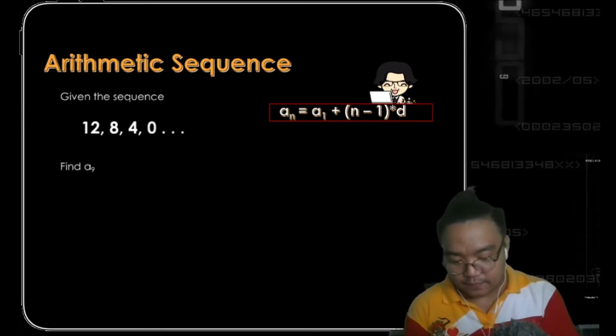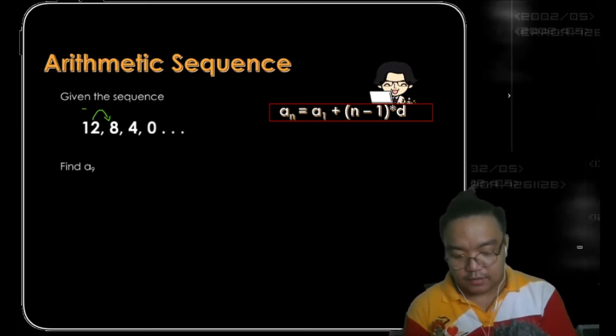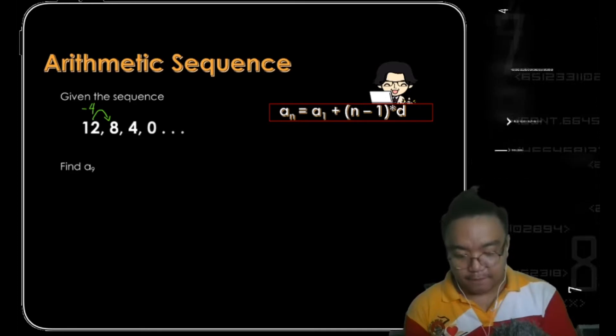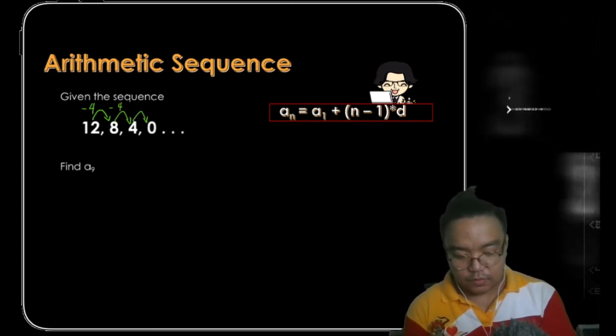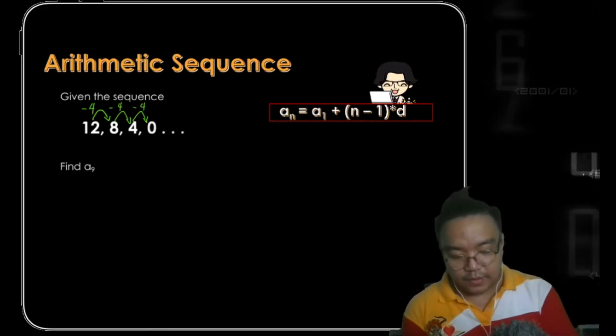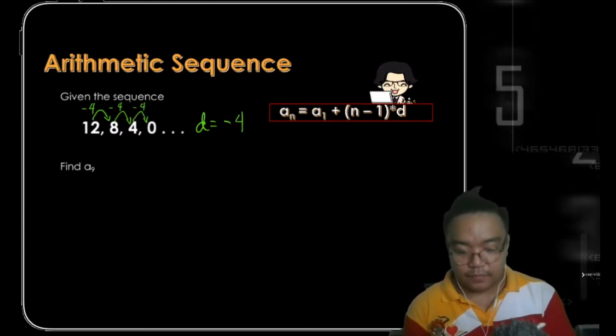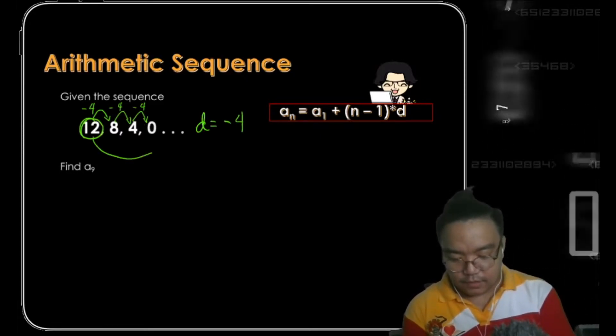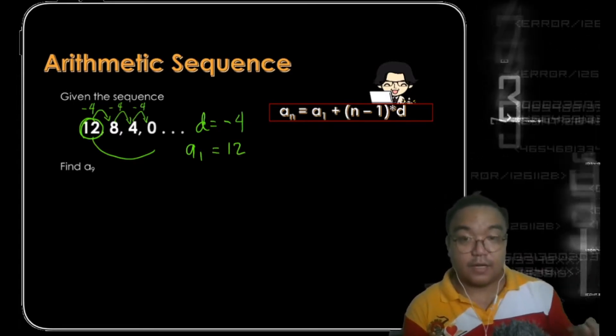From 12 going to 8 we subtracted 4, from 8 going to 4 we subtracted 4, and same goes from 4 going to 0. So now we can say that our common difference is negative 4. 12 is our first term, so is this enough for us to solve for the ninth term of this sequence? The answer is yes.